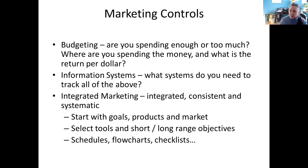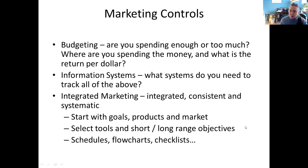Integrated marketing means you have your goals, your products, and your market. You look at your tools and set your short and long-range objectives. Then you have your system — the things that make it work: your schedules, flow charts, checklists — always checking back in with your short and long-range objectives. Are you meeting those short-range objectives that get you to your long-range objective, or are you missing them? Are there things you're going to have to change — your product line, your pricing, your messaging? You have a long-range objective; in a new business that's usually to get into the black and pay off your debts. How do you get there?